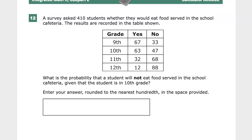Hey everyone, this is question number 12 on the TN Ready Practice Test, the 2019 version anyway, for Integrated Math 2. The question says, and this is a calculator section I should have mentioned. A survey asks 410 students whether they would eat food served in the school cafeteria. The results are recorded in the table shown below.